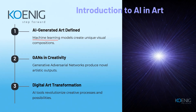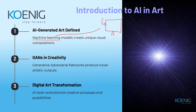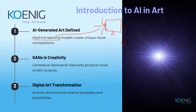Machine learning is basically a subset of artificial intelligence in which machines have the capability to learn something from previous data. It's not magic — machines are already trained with large amounts of historical data, and depending on that they make predictions or generate new outputs. So machine learning models are responsible for learning from data and then predicting or generating something new.